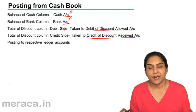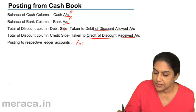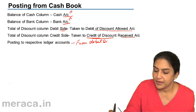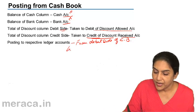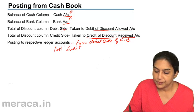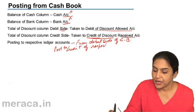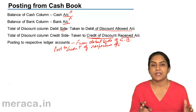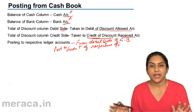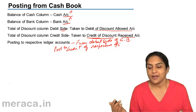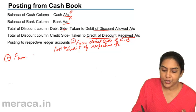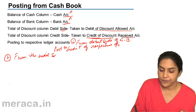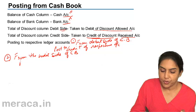Finally, we post to the respective ledger accounts. From the debit side of the cash book, when we post, we post to the credit of the respective accounts. So on the debit side, if there is an entry on account of capital, we open the capital account and on the credit side we write 'By Cash, so much.' From the credit side of the cash book, we post to the debit of the account.